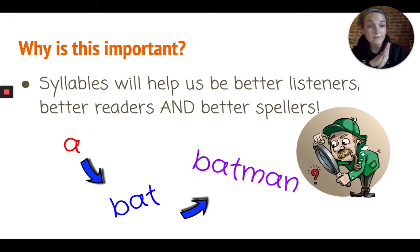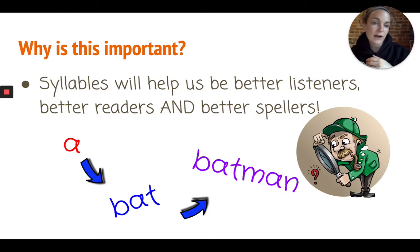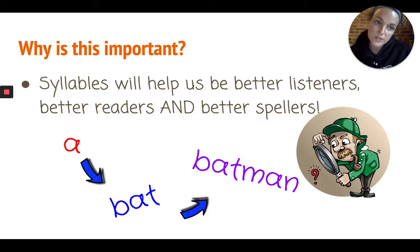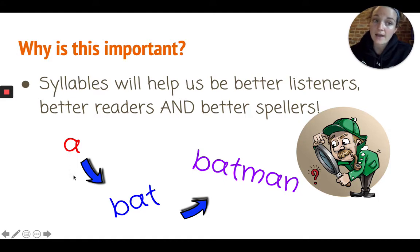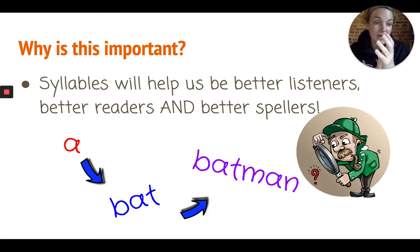First, we're going to listen for parts of words. Then after you can hear the parts of words, we'll connect those parts to different letters that make different sounds, and we'll build all the way up until we're really, really great readers and spellers. So if you can hear individual sounds like 'a,' then you'll be able to read them in small words like 'bat,' and then we'll be able to put words and syllables together like 'bat,' 'man,' into longer words like Batman.